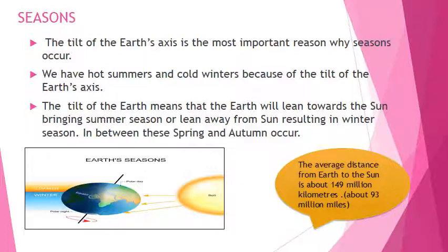The tilt of the Earth's axis is the most important reason why seasons occur. We have hot summers and cold winters because of the tilt of the Earth's axis. The tilt means that the Earth will lean towards the sun, bringing summer season, or lean away from the sun, resulting in winter season. In between these, spring and autumn occur.